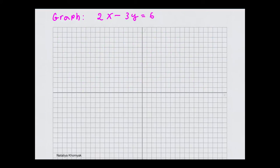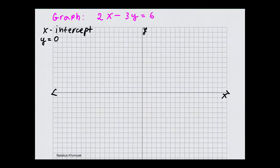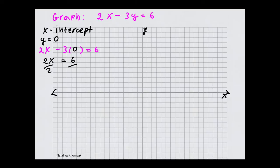Let's graph 2x minus 3y equals 6. We have a y and x-axis. Let's find the x-intercept — it will be crossing the x-axis, our horizontal line. To calculate it, we set y equal to 0. So we have 2x minus 3y equals 6. We plug in 0 for y, so anything times 0 is 0. Dividing both sides by 2, x is equal to 3. So our first point is (3, 0).